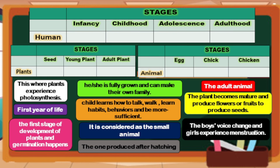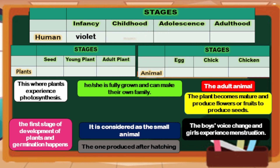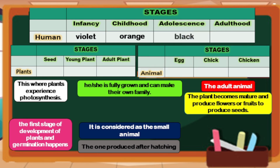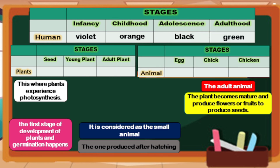Let's check your answers. For table 1, about humans: for infancy, the answer is color violet — he or she is completely dependent on parents for survival. Next is childhood, color orange — the child learns how to talk, walk, learn habits, behaviors, and be more self-sufficient. Third is adolescence, color black — boys' voices change and girls experience menstruation. And for adulthood, the answer is color green — he or she is fully grown and can make their own family. Good job!